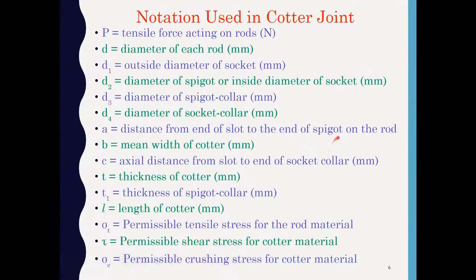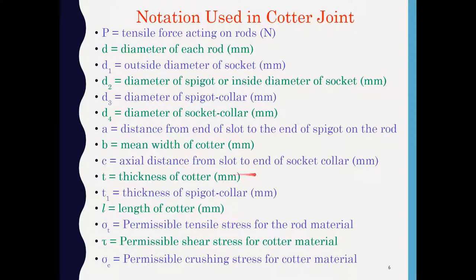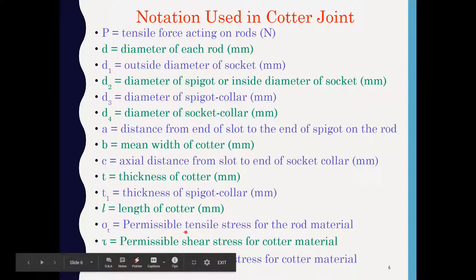The various notations written on this slide: P is the tensile force, D is the diameter of each rod, D1 is the outside diameter of the socket, D2 is the diameter of the spigot, D3 is the diameter of the spigot collar, D4 is the diameter of the socket collar, A is the distance from the end of the slot to the end of the socket collar, D is the thickness of the socket collar, D1 is the thickness of the spigot collar, L is the length of the cotter, sigma_t is the permissible tensile stress for the rod material, and tau is the permissible shear stress for the cotter material.